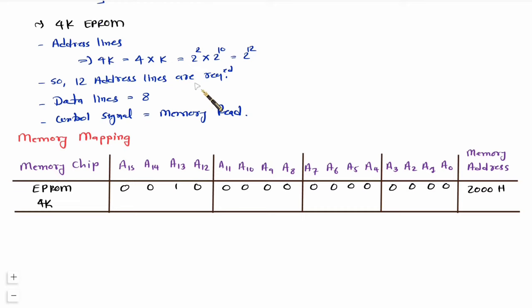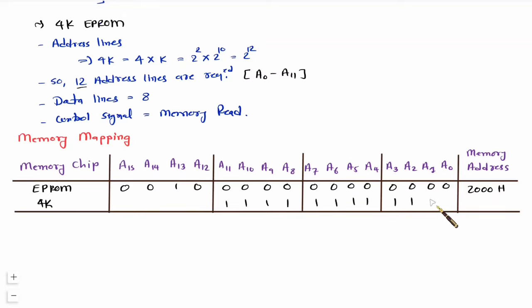There are 12 address lines, used from A0 to A11. The lines A0 to A11 are the ones that transition from 0 to 1, covering the address range. The unused upper lines stay fixed as 0010. Making the lower 12 bits all 1s gives FFF, so the ending address is 2FFF hex with this 4K EEPROM.